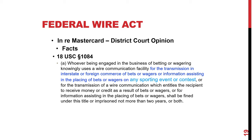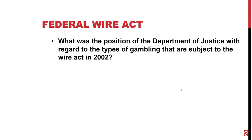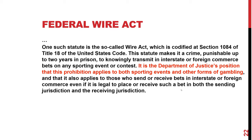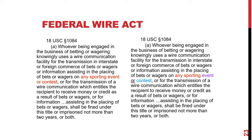This was in 2001. In 2002, the Department of Justice issued a letter confirming their prior opinion that the Federal Wire Act applied to all forms of wagering. Their view was that sporting events were one thing, and contests were games with prize, chance, and consideration. While the Fifth Circuit held in In Re MasterCard that 'sporting' modified both 'event' and 'contest,' the DOJ maintained it wasn't two separate things.